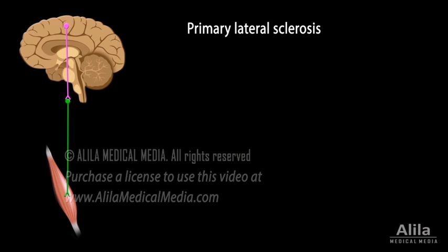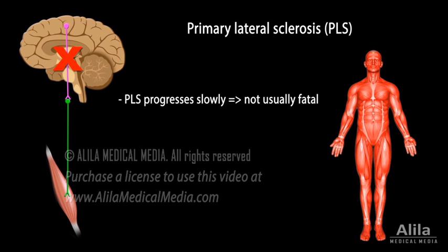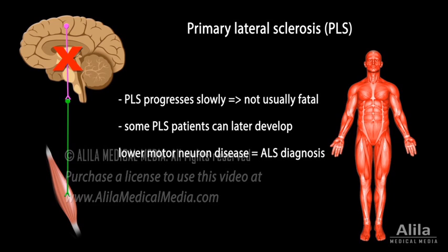Primary lateral sclerosis, PLS, affects only upper motor neurons. The lower limbs are often the first to be affected, followed by the torso, upper limbs, and eventually the muscles involved in chewing, swallowing, and speaking. PLS progresses much more slowly than ALS and is not usually fatal. However, because a number of ALS cases start out as PLS, a PLS diagnosis is considered definitive only after at least four years.